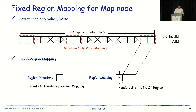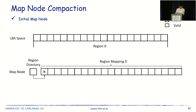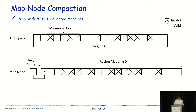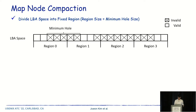The total size of map nodes accounts for 99% of the interval mapping tree size, so reducing map node size is the key to reducing the interval mapping tree size. We develop a new mapping scheme named fixed region mapping for the map node. The goal of fixed region mapping is to map only valid LBAs and exclude invalid LBAs. Fixed region mapping consists of two elements: region directory and region mapping. The region mapping represents consecutive valid mappings, consisting of a header and a mapping array. The header contains the start LBA of the valid region. A region mapping is created for each valid region. The region directory provides the location of each region mapping.